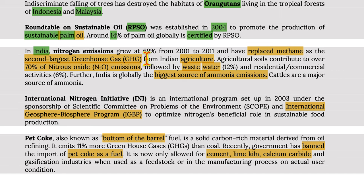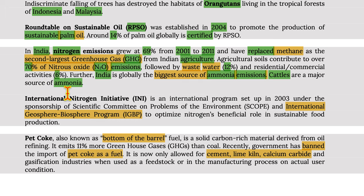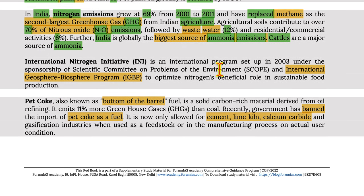In India, nitrogen emissions grew by 69% from 2001 to 2011 and have replaced methane as the second largest greenhouse gas from Indian agriculture. Agricultural soil contributes over 70% of nitrous oxide (N₂O) emissions, followed by wastewater at 12% and residential/commercial activities at 6%. India is globally the biggest source of ammonia emissions, with cattle being a major source. The International Nitrogen Initiative is an international program set up in 2003 under the sponsorship of SCOPE and the International Geosphere–Biosphere Programme to optimize nitrogen's beneficial role in sustainable food production.